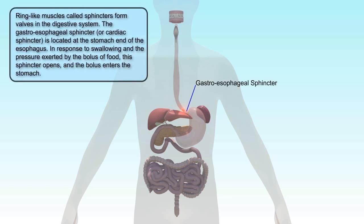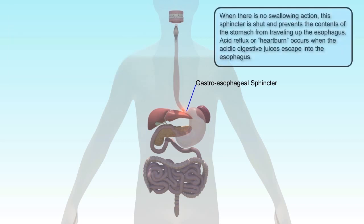Ring-like muscles, called sphincters, form valves in the digestive system. The gastroesophageal sphincter is located at the stomach end of the esophagus. In response to swallowing and the pressure exerted by the bolus of food, this sphincter opens and the bolus enters the stomach. When there is no swallowing action, this sphincter is shut and prevents the content of the stomach from travelling up the esophagus. An acid reflux occurs when the acidic digestive juices escape into the esophagus.